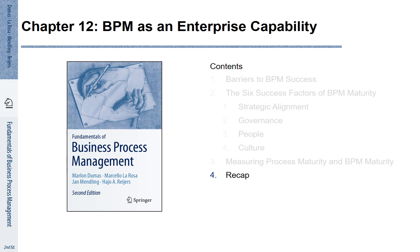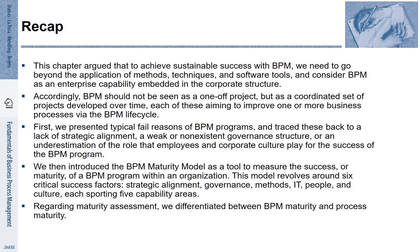To recap: in this chapter we argued that to achieve sustainable success of BPM, we need to go beyond the application of methods, techniques, and software tools, and consider BPM as an enterprise capability embedded in the corporate structure. Accordingly, BPM should not be seen as a one-off project, but as a coordinated set of projects developed over time, each aiming to improve one or more business processes along the BPM lifecycle. We discussed typical failure reasons of BPM programs, tracing them back to a lack of strategic alignment, weak or non-existing governance structure, or an underestimation of the role of employees and corporate culture.